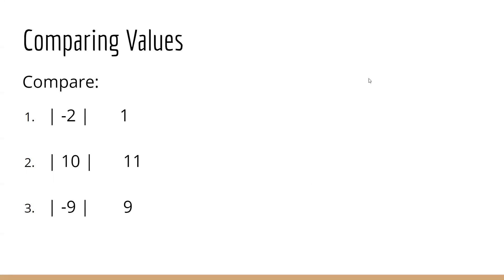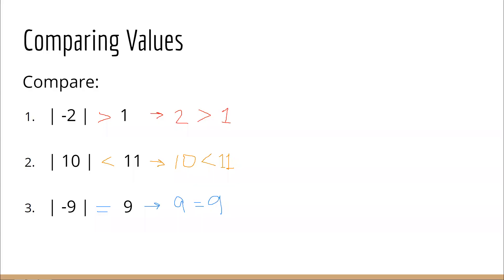Pause the video if you are confused about the comparing values section. If you are ready, work through these problems and then start the video for the answers. The absolute value of negative 2 turns into 2, so I'm comparing 2 and 1 — two is greater than one, so I use a greater than symbol. Number two is less than. And number three is equal to.